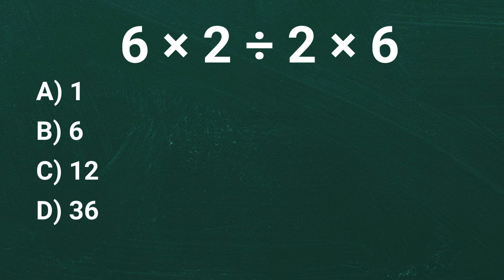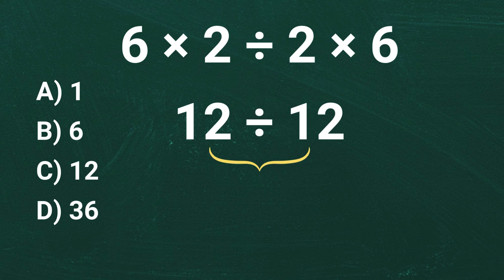When solving a problem like this, some people might start by multiplying 6 times 2 which equals 12. Next, they multiply 2 times 6 which also equals 12. And finally, divide. 12 divided by 12 which equals 1.